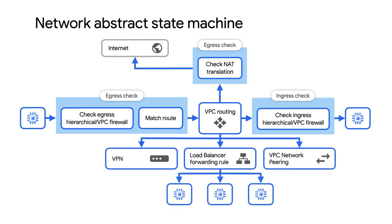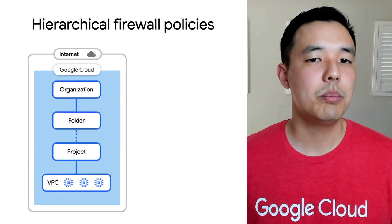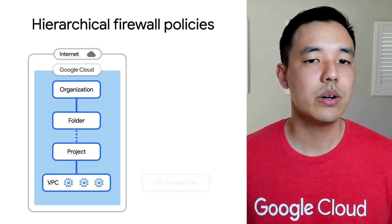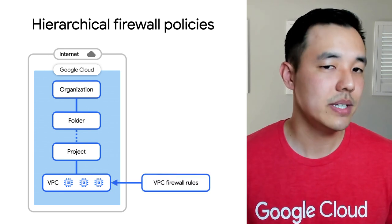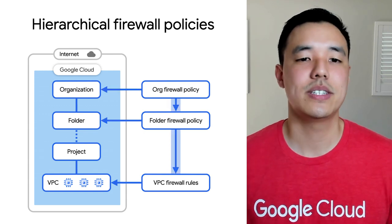With this launch, Connectivity Test can take into account the newly launched hierarchical firewall policy rules in addition to the previous VPC firewall rules. For context, hierarchical firewall policies provide you the ability to create firewall rules not only at the VPC, but at the folder and organizational level.